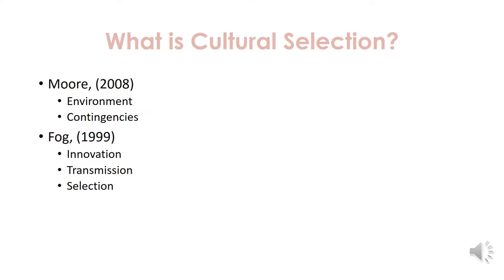Fogg talked about things similar to that — in order for cultural selection to happen there has to be innovation, transmission, and selection. Innovation refers to finding solutions to problems related to the welfare and survival of the group as a whole — finding new ways to do things. Transmission discusses the practices of transmitting those practices to other group members, figuring out a way to come together and work on this different solution.